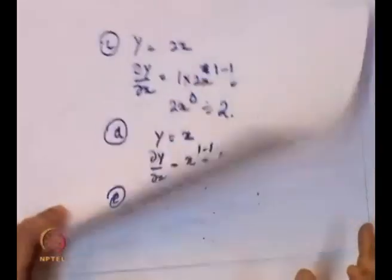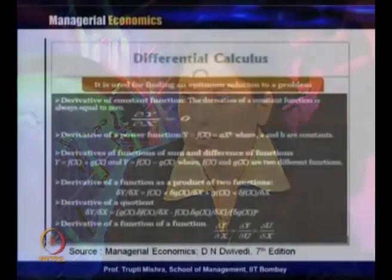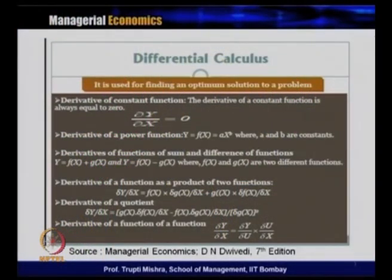This is how we solve when we get a power function. The power in the functional form can take any value — less than 0 or greater than 0. Now we discuss the third category: the derivative of a function of sums or differences of functions.